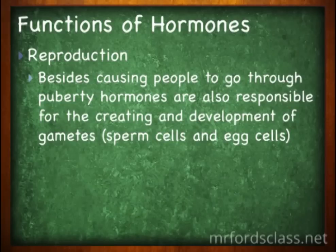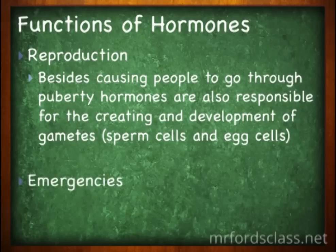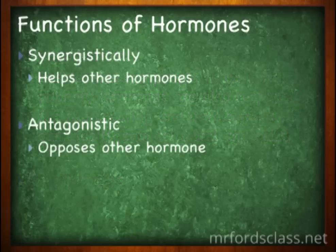Reproduction, the continuation of the species. Besides causing people to go through puberty, hormones are also responsible for the creation and development of gametes. And we'll take a look at gametes in further detail later on. It deals with emergencies, if you take a look at the stress response. It can be synergistic and antagonistic. Synergistic, in that it helps other hormones, or antagonistic, in that it opposes other hormones.